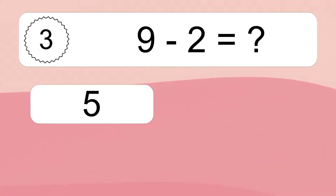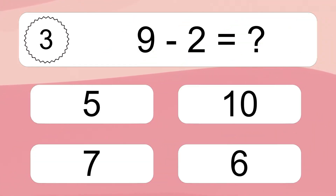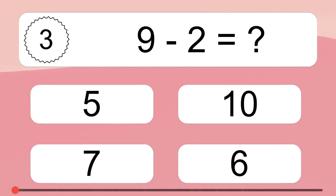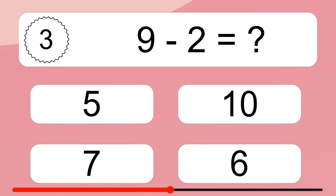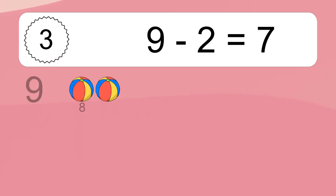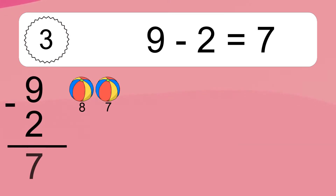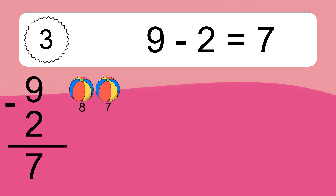9 minus 2 equals what? 9 minus 2 equals 7. Let's count it: 8, 7.